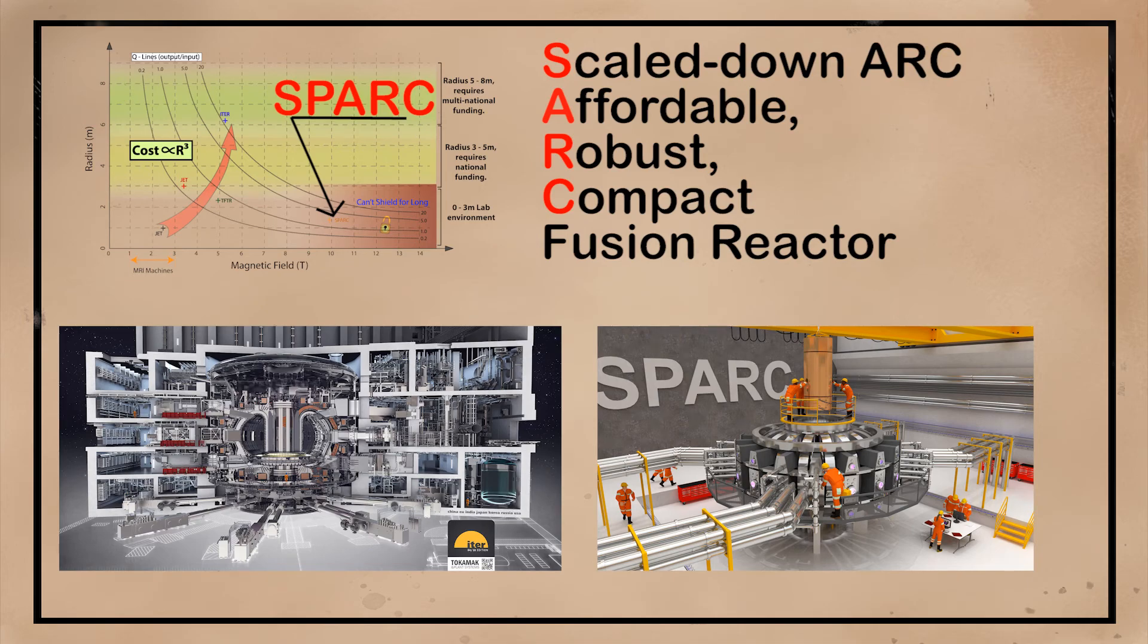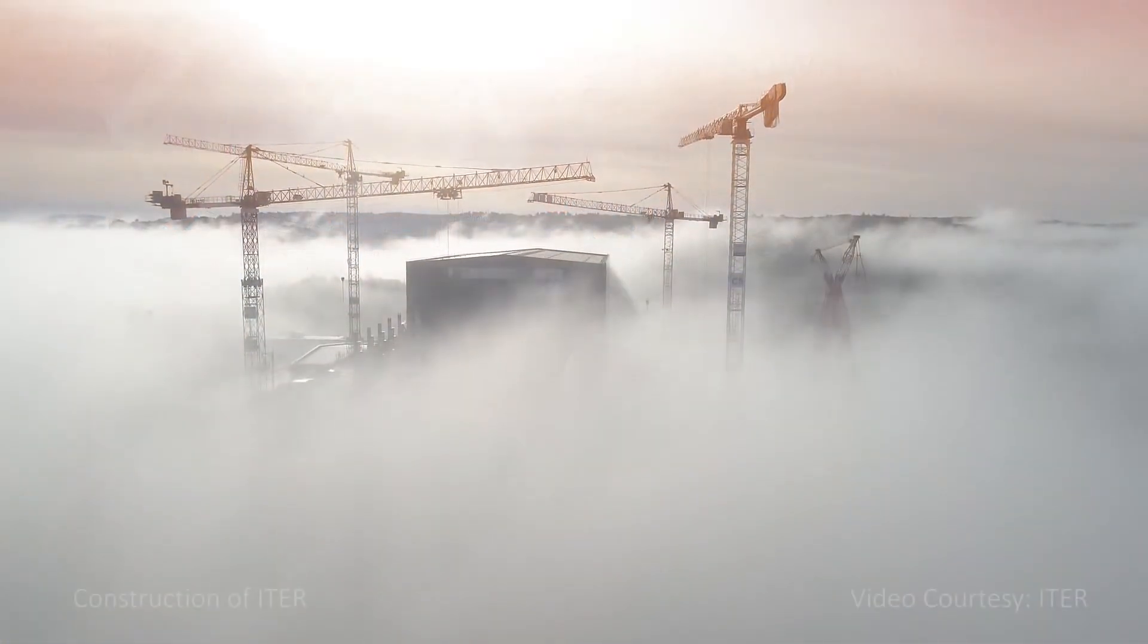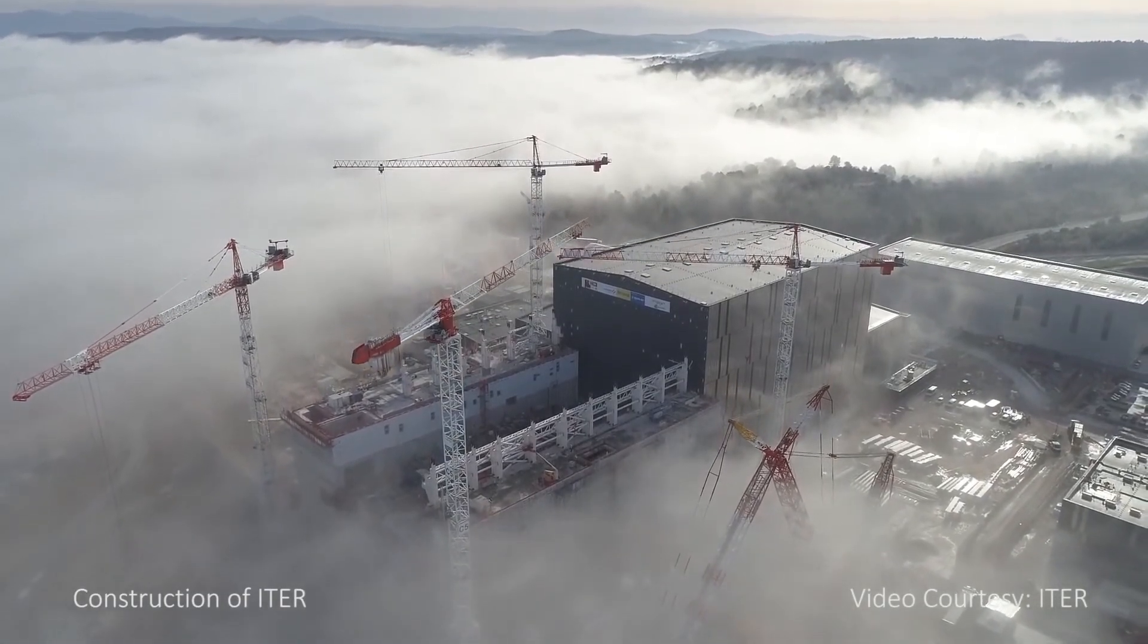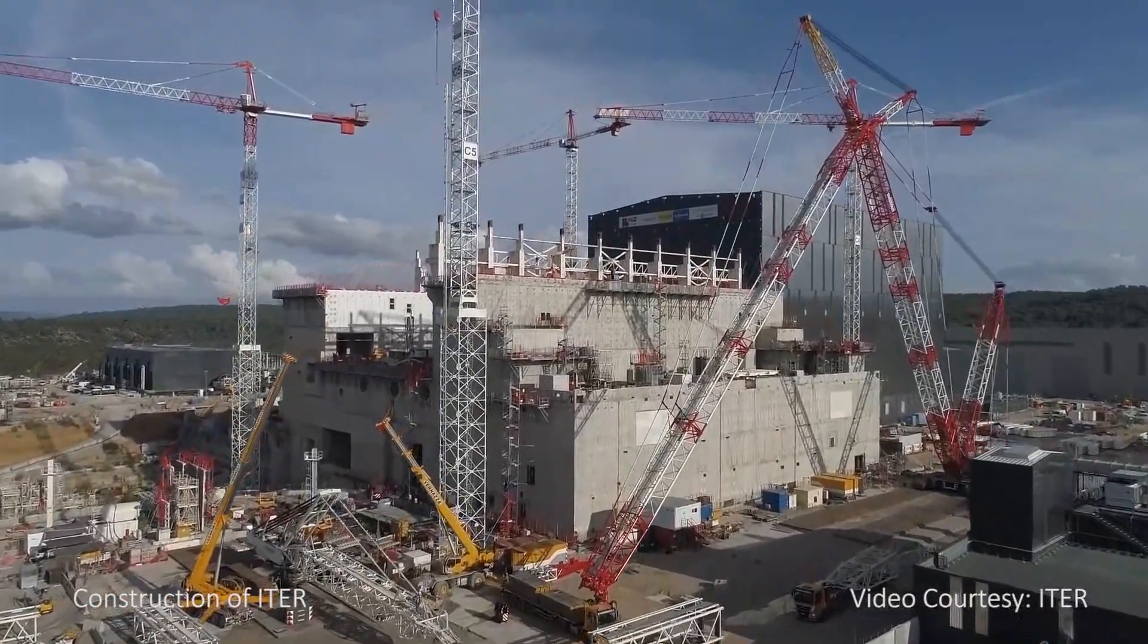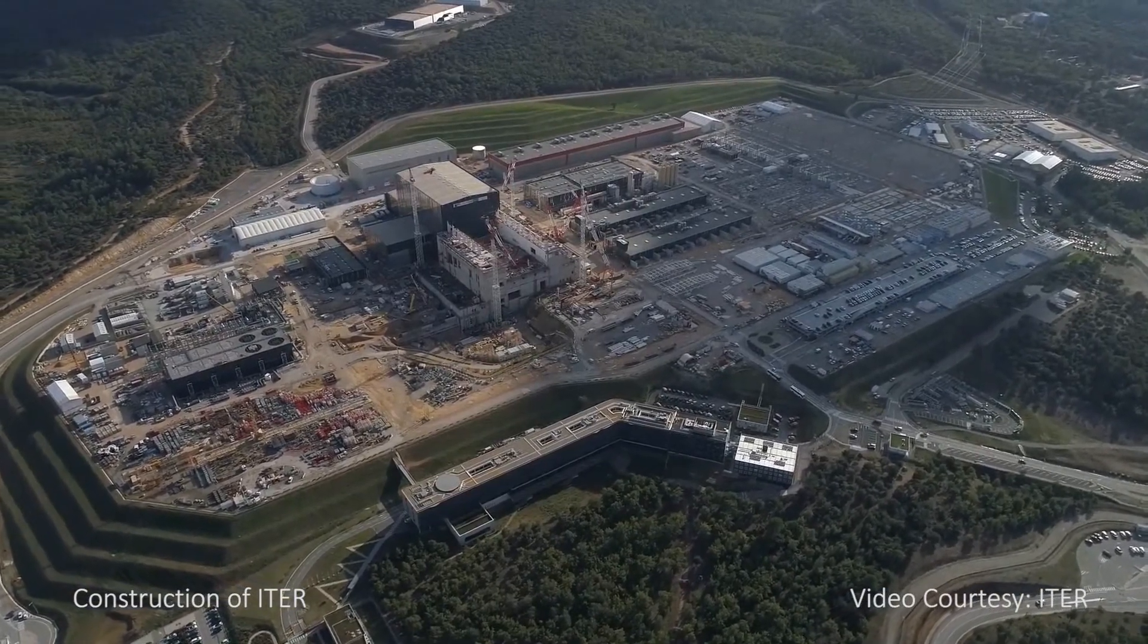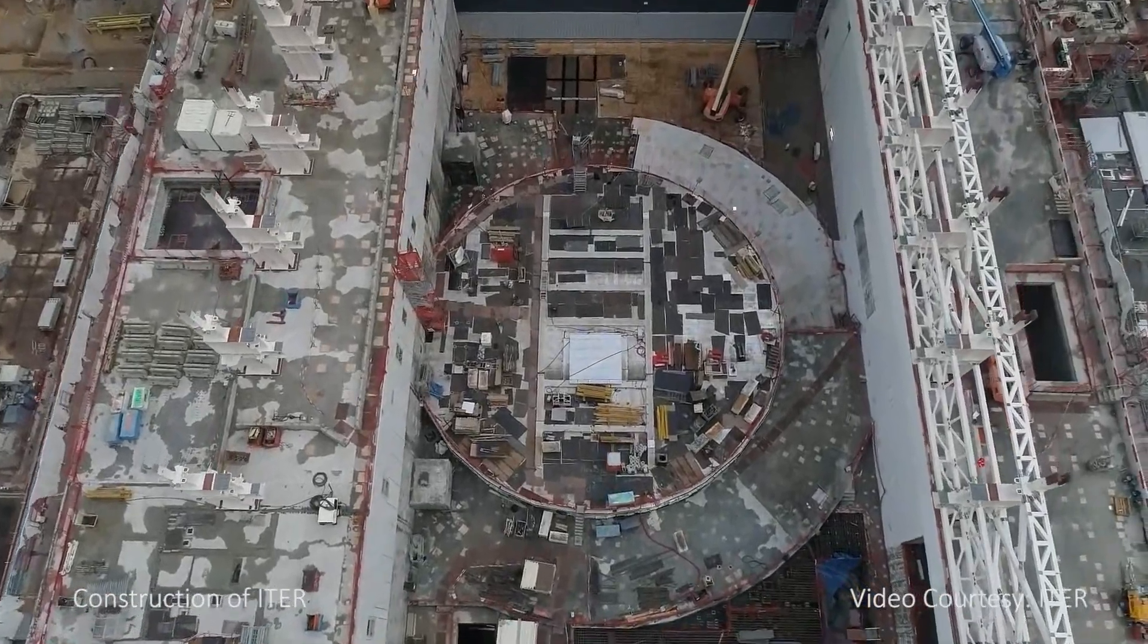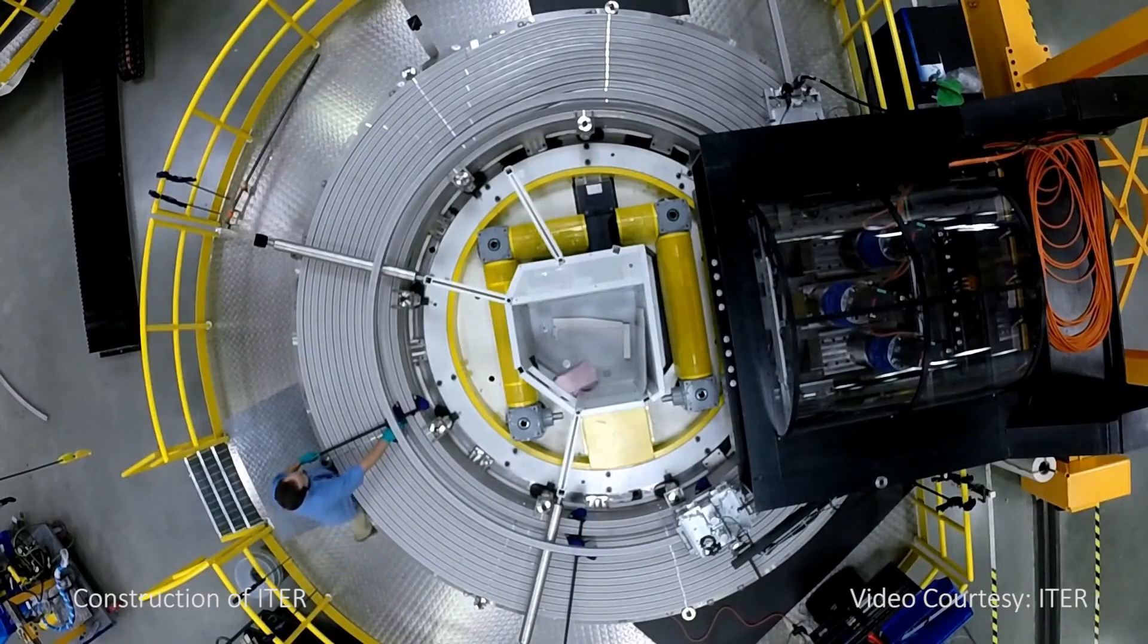Both SPARC and ITER are expected to be operational around 2025. Scientists are pretty confident that they will manage to achieve net energy gain, but regardless, these are just experiments, and an actual fusion power plant may take another 20 or 30 years to develop and build. So if everything goes as planned, fusion reactors might start sending electrons into the power grid in the 2050s. Thank you for watching. Please don't forget to like and subscribe. You can also check out some of my other videos on the links shown. Thank you and see you soon.